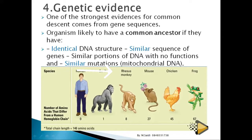Frogs are 67% different from humans, and chickens are 45% different. This genetic evidence shows that if organisms share genetic similarities, they share a line of descent.